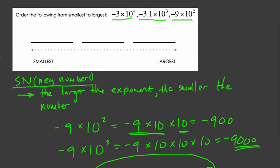With that in mind, we can quickly solve this problem. The largest exponent is 4, so negative 3 times 10 to the 4th is the smallest number. Then we have negative 3.1 times 10 to the 3rd in the middle, that's the middle exponent. And the smallest exponent, negative 9 times 10 squared, is our largest number.